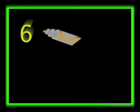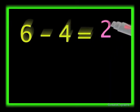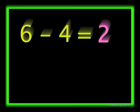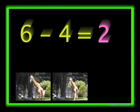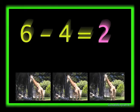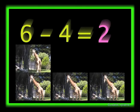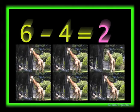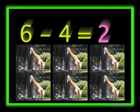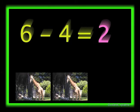Six minus four equals two. There are six giraffes: one, two, three, four, five, and six. Out of six giraffes, if four giraffes walk away, then two giraffes will be left. So six minus four equals two.